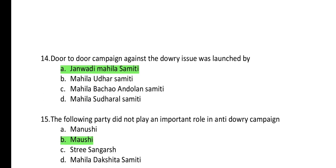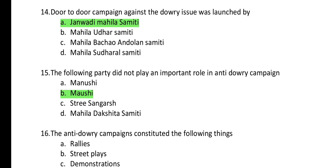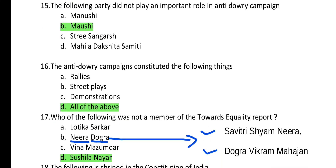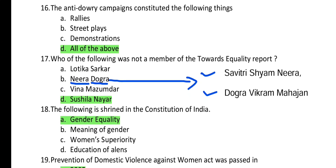Question 14: The door-to-door campaign against the dowry issue was launched by A — Janwadi Maila Samiti. Question 15: Which party did not play an important role in the anti-dowry campaign? It is Mousy. Question 16: The anti-dowry campaigns constituted rallies, street plays, and demonstrations. The answer is D — all the above.